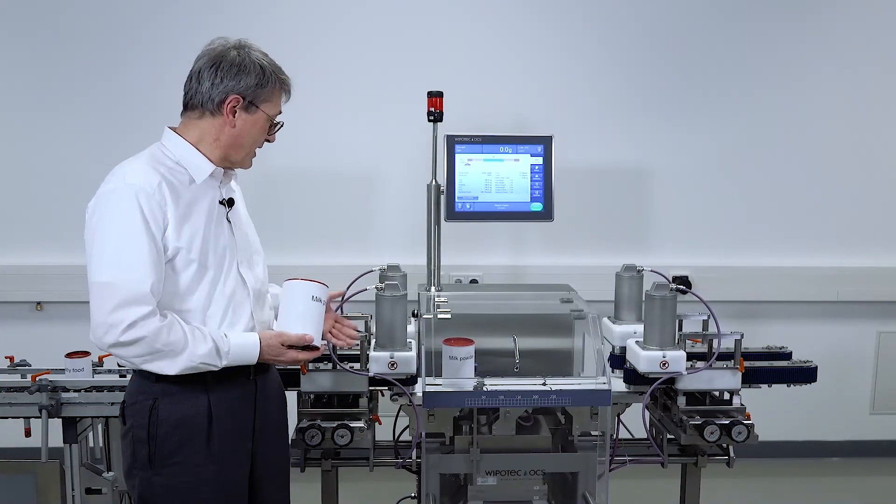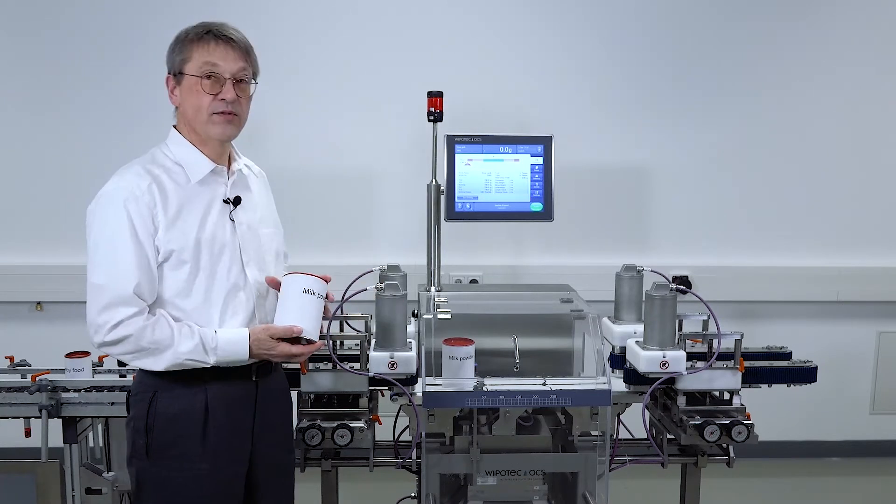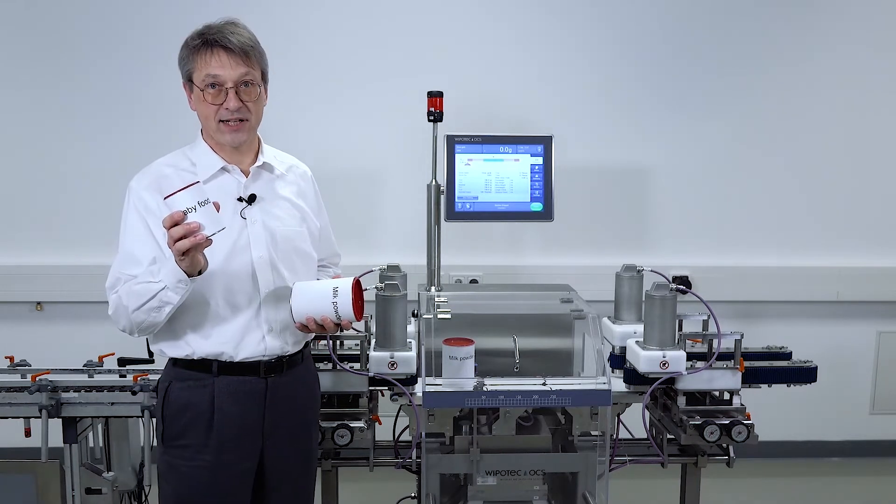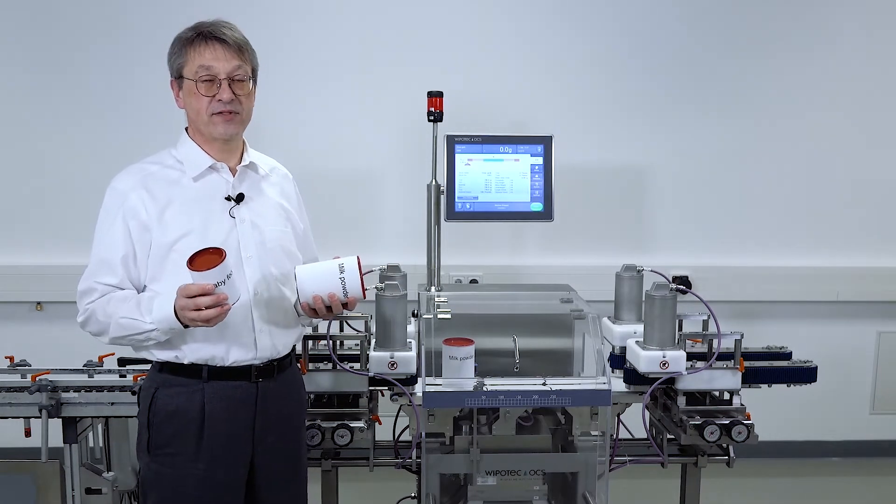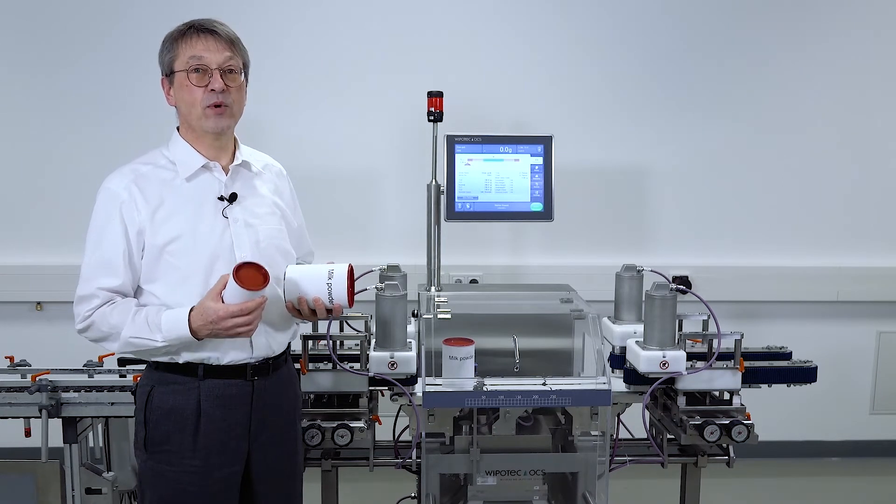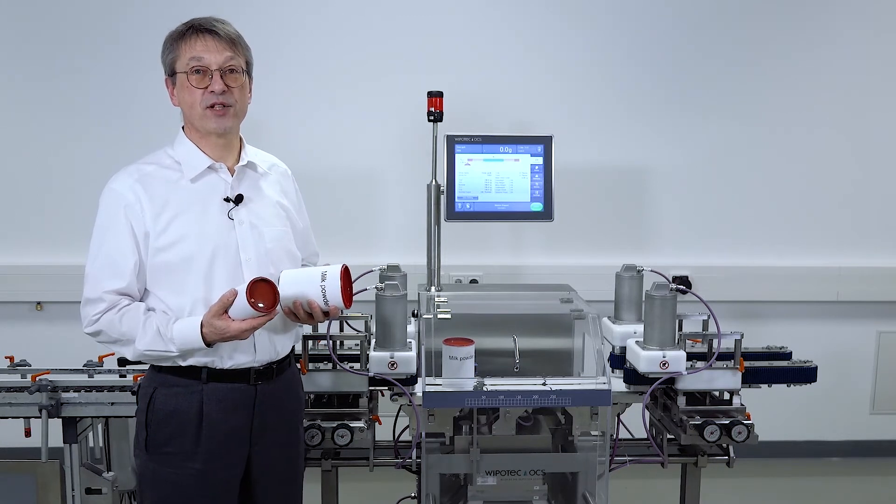An interesting part of side grip conveyors is that you must have some adjustment for different products. For example, you have big cans and you have smaller cans. So you may run different product sizes on the same line and then you want to adjust the side grip conveyors to the product dimensions of your product.